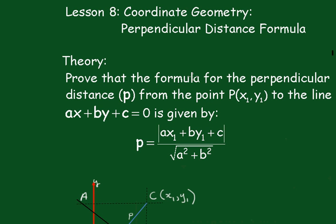We have to prove that the formula for the perpendicular distance p from the point x1, y1 to the line ax plus by plus c equals 0 is given by p equals the absolute value of ax1 plus by1 plus c all over the square root of a squared plus b squared.